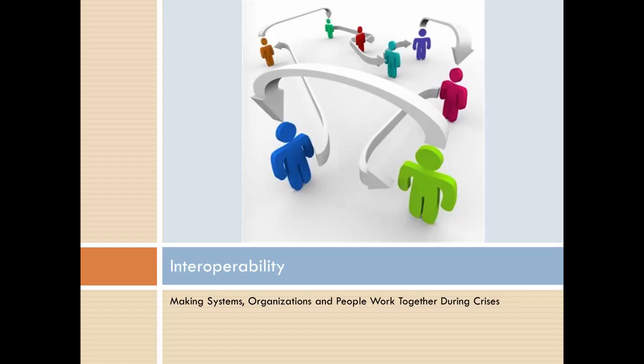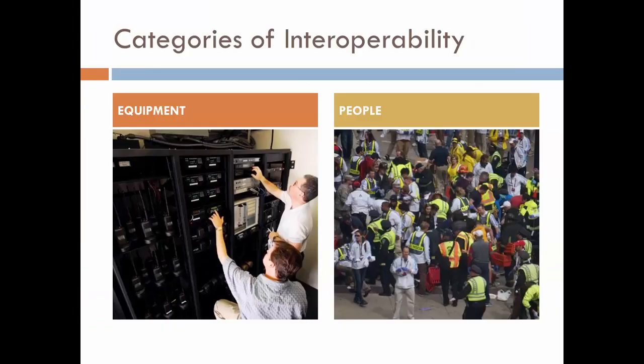Interoperability is the ability to make disparate systems, organizations, and people work together during crises. Integral to making interoperability possible within emergency management and with the public at large is the ability to effectively communicate. Interoperability relies heavily on the exchange and use of information among large, heterogeneous networks of people. This means that interoperability is separated into two general categories: equipment and people.